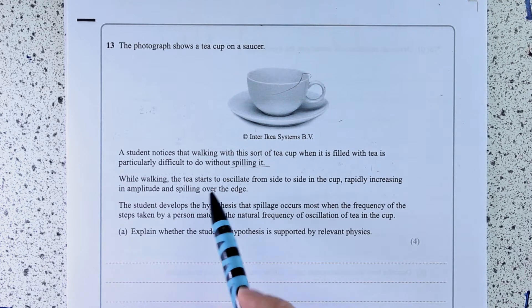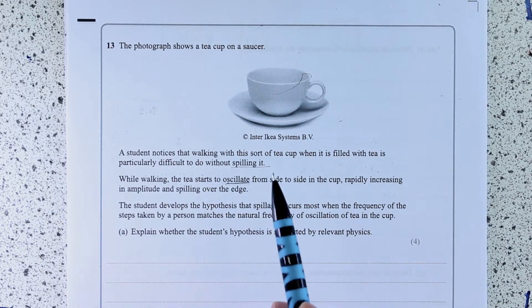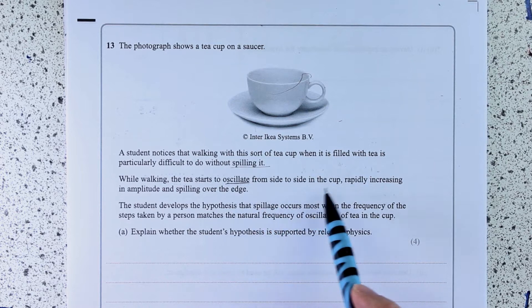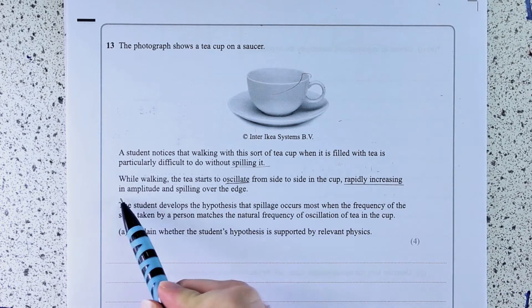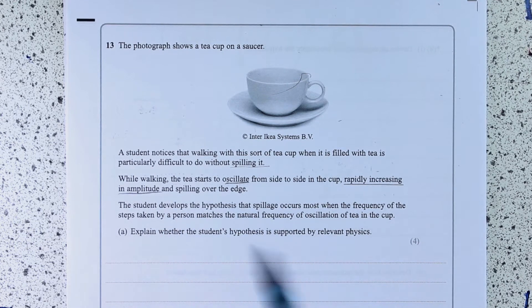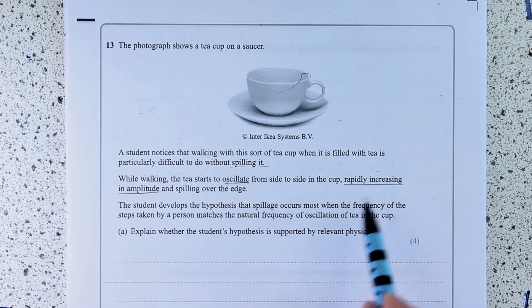So while walking, the tea starts to oscillate. So we're thinking SHM, we're thinking waves, something like that from side to side in the cup. Rapidly increasing in amplitude and spilling over the edge. This is starting to ring bells from a certain explanation.